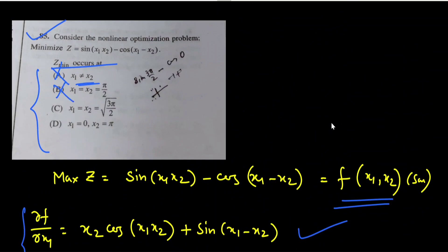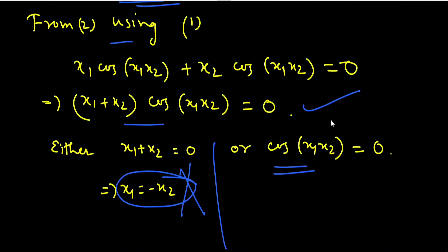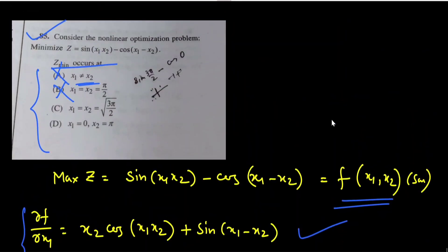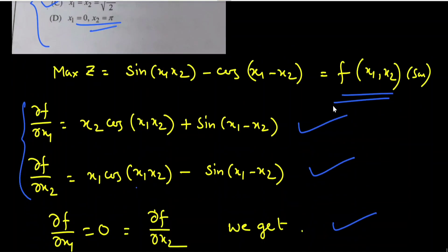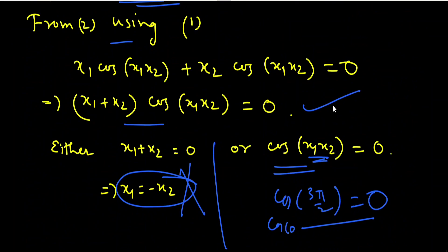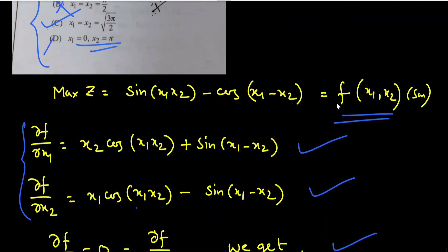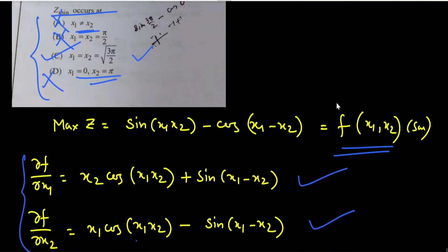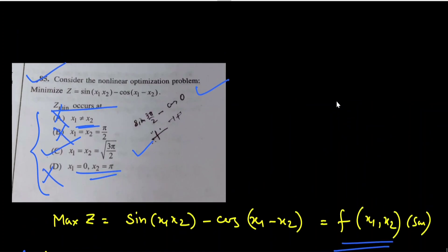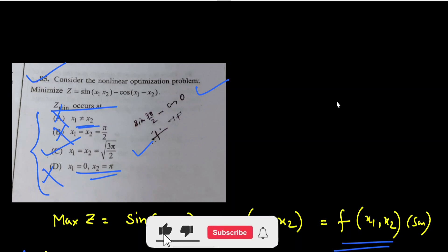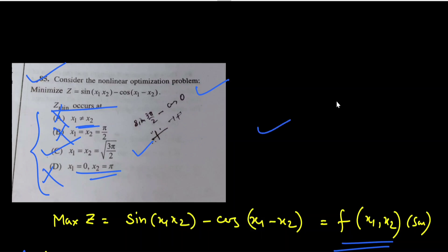If x₁ = x₂ = √(3π/2), then cos(x₁x₂) = cos(3π/2) = 0. This satisfies the condition, so option C is correct. If x₁ = 0 and x₂ = π, then cos(0) = 1 ≠ 0, so option D is discarded. Only option C is correct. That was the last question. If the video was helpful, please like, share with your friends, and subscribe to the channel. Thank you, see you in the next video.